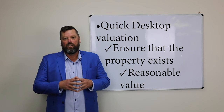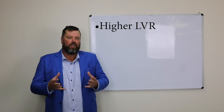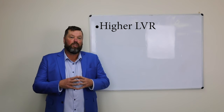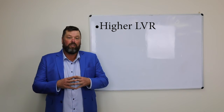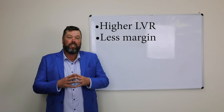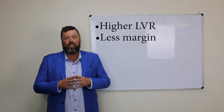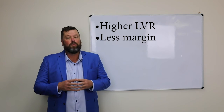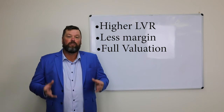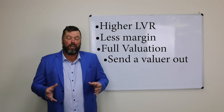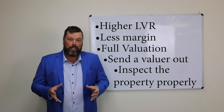The higher the LVR — say a $360,000 loan on a $400,000 property — there's less margin in that deal for the bank, only 10%, meaning it's a 90% lend. In that case, the bank is most likely to do a full valuation: send a valuer out there to inspect the property properly.